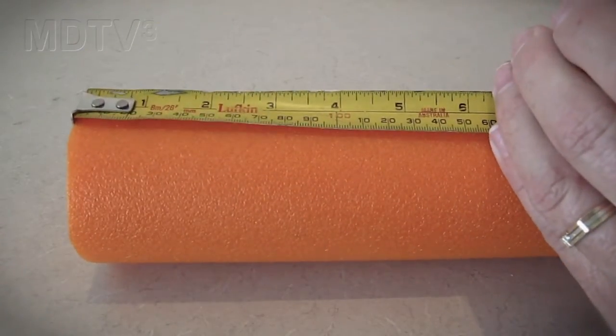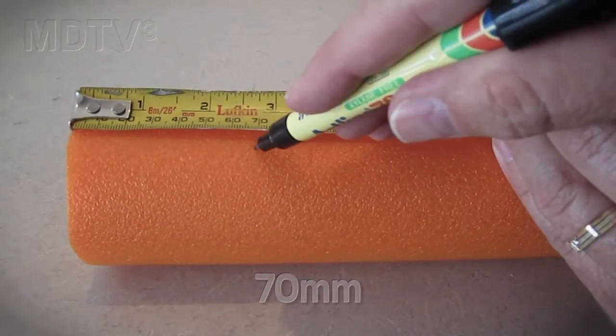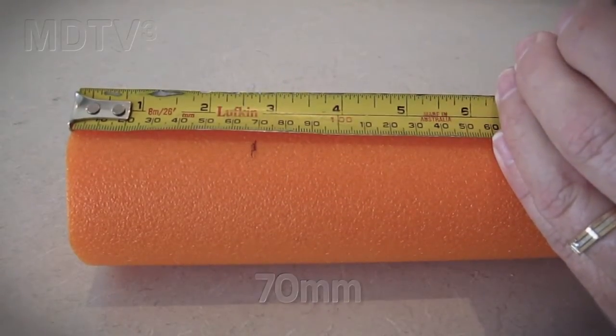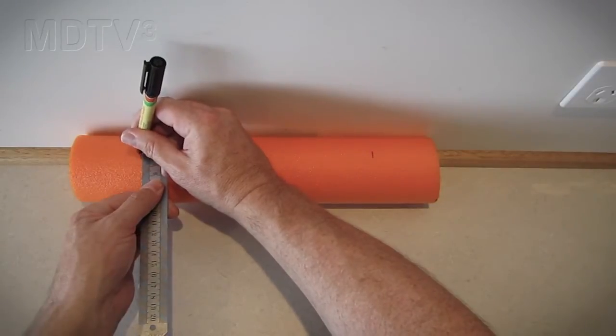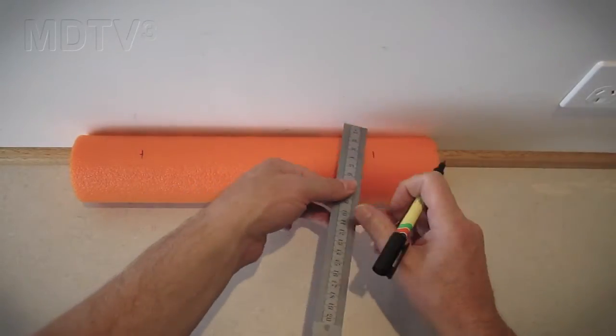Mark the position for the holes 70 millimeters in from each end on all sections. To make sure the holes are in the same line, you can place the sections against a wall and measure out the same distance from the wall.